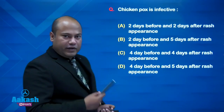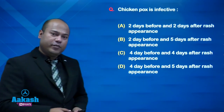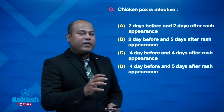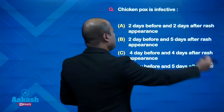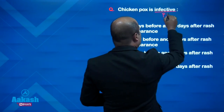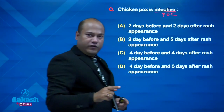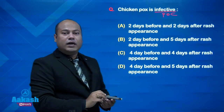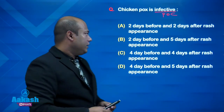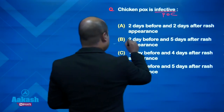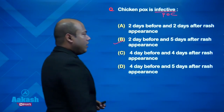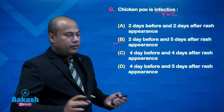MCQ on chickenpox infective period — the period of communicability is two days before the onset of rash up to five days after the onset of rash, totaling seven days. That will be the answer. In further slides, we will discuss respiratory infections: measles, mumps, and rubella. Stay tuned.